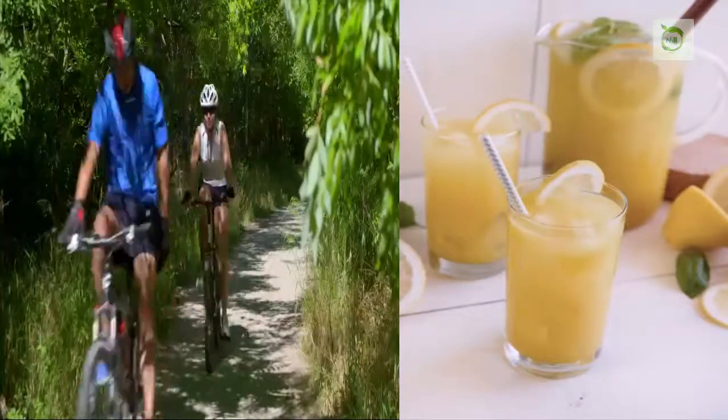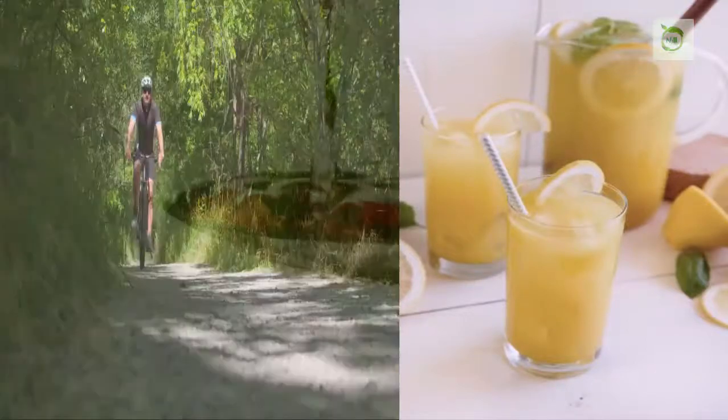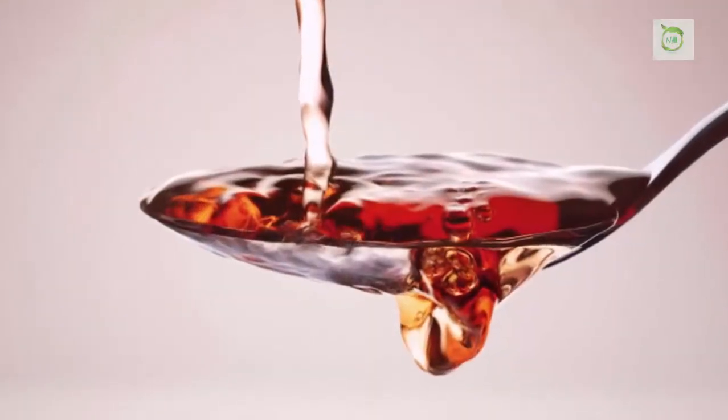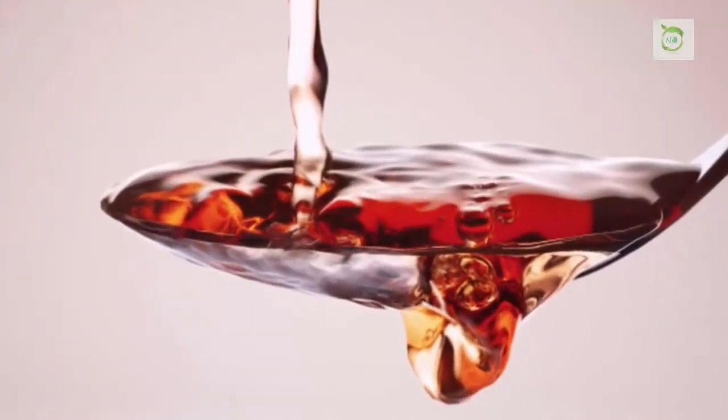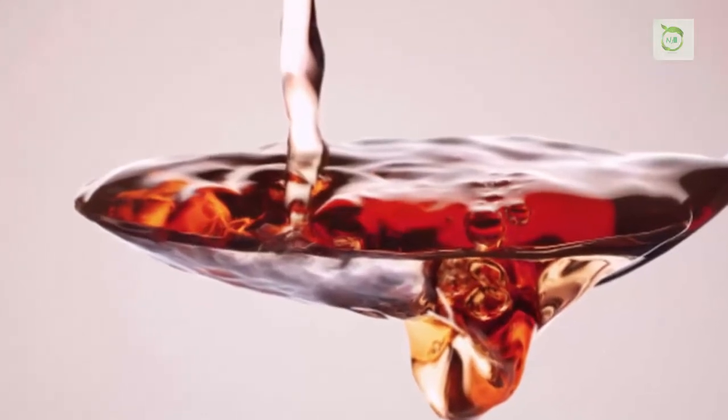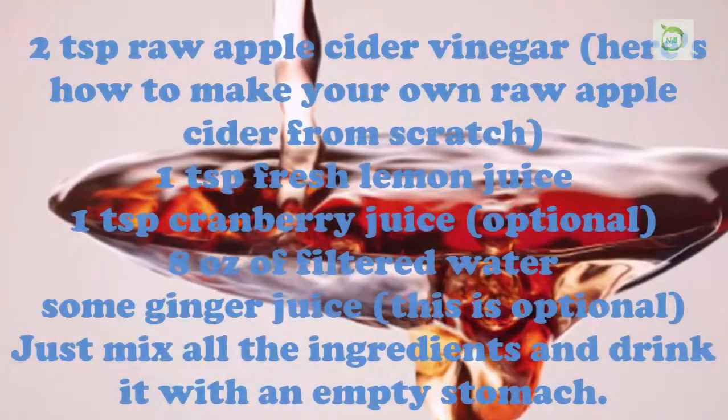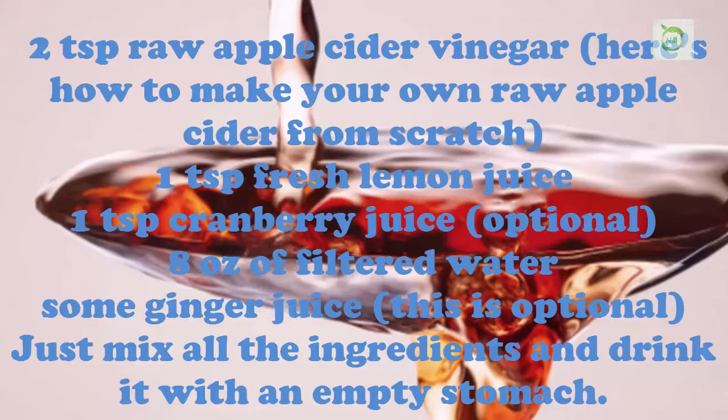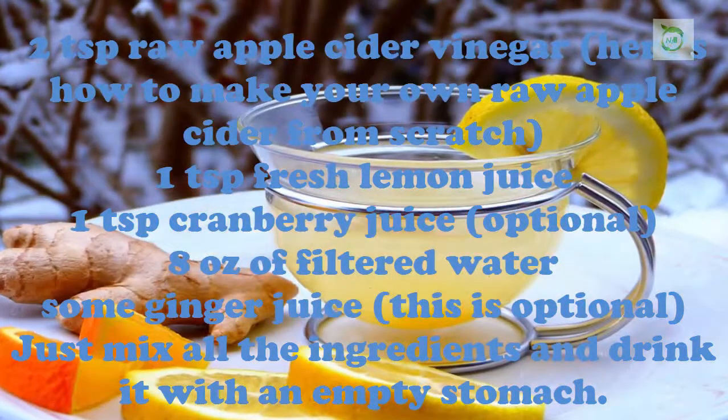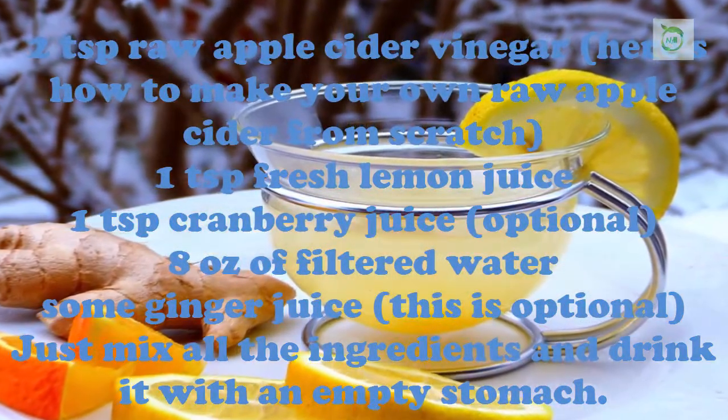Here's an easy recipe you can make. Two teaspoons raw apple cider vinegar, here's how to make your own raw apple cider from scratch. One teaspoon fresh lemon juice, one teaspoon cranberry juice optional, eight ounces of filtered water.